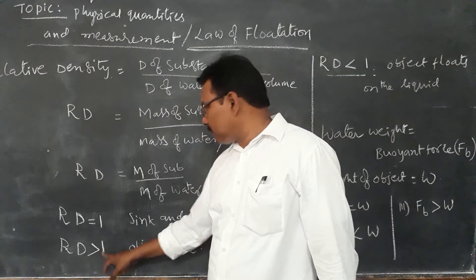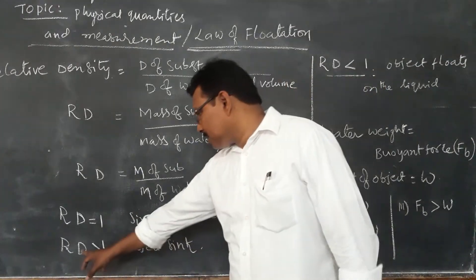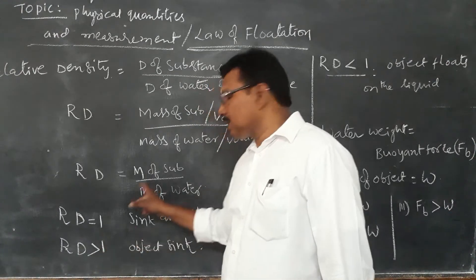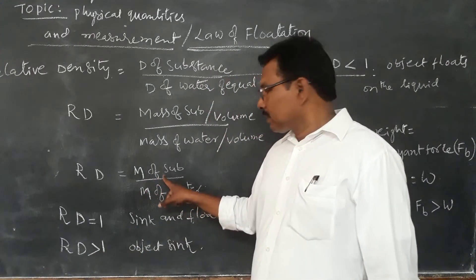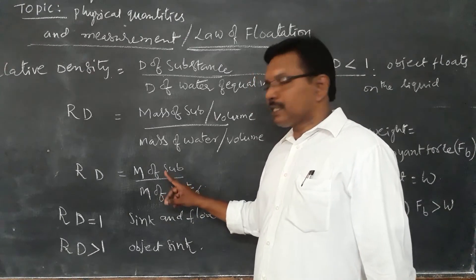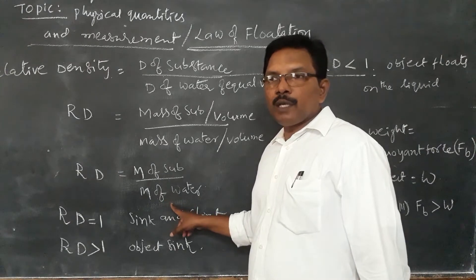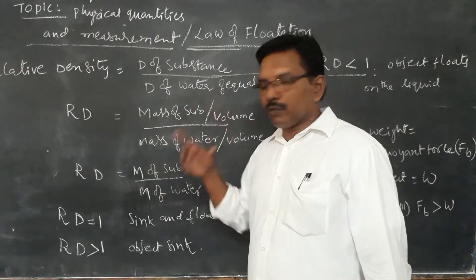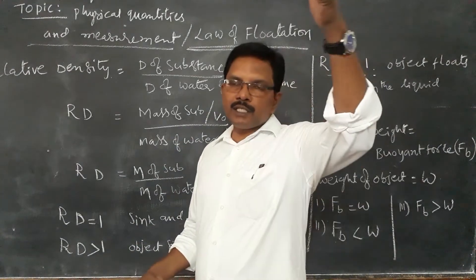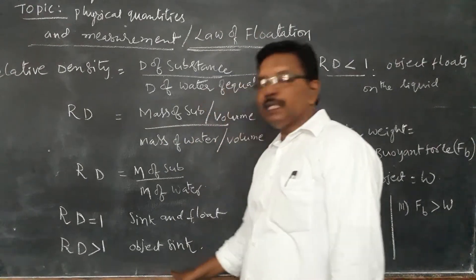The next case is when relative density is greater than one. This is like an improper fraction, where the numerator is greater than the denominator — meaning mass of the substance is greater than mass of the water. In this case, the substance weight overcomes the water weight and the object will completely sink.